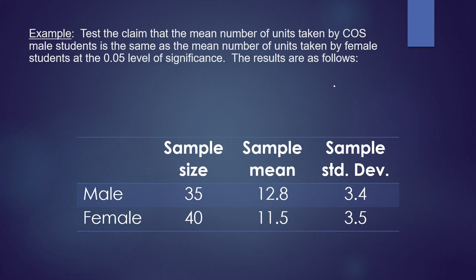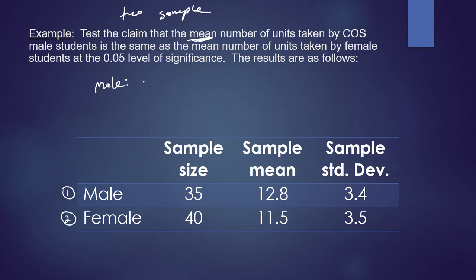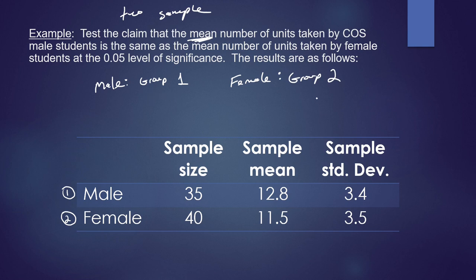Let's try example one. Test the claim that the mean number of units taken by COS male students is the same as the mean number of units taken by female students at the alpha equals 0.05 level of significance. We have a table with sample size, sample mean, and sample standard deviation for both groups. Since this is a two-sample mean test, we need to identify which is group 1 and which is group 2. We'll let males be group 1 and females be group 2.